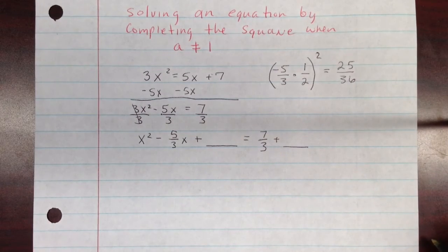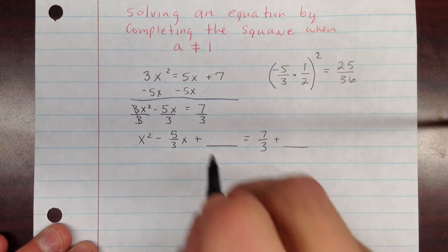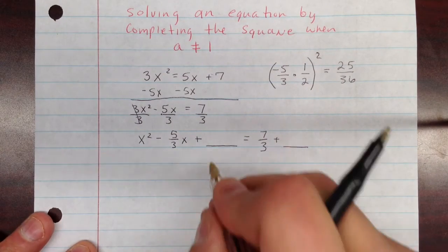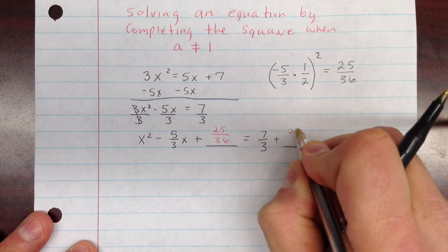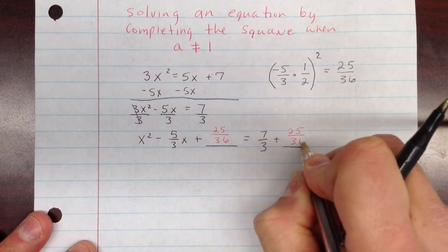Don't want to change it to a decimal because it does not terminate. So we're going to leave it like that. So then we're going to take and add that to both sides. So plus 25/36 here. And plus 25/36 here.